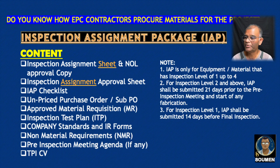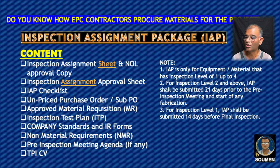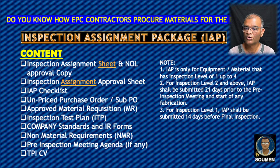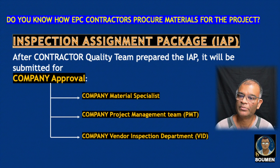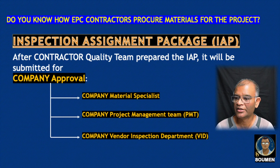Some important notes: IAP is only for equipment or material with inspection level 1 through 4. For inspection Level 2 and above, the IAP shall be submitted 21 days prior to the pre-inspection meeting and the start of any fabrication. For inspection Level 1, IAP shall be submitted 14 days before final inspection. The IAP always goes through company approval similarly to the MR: first to company material specialist, then PMT, then to the vendor, and final approval comes from the Vendor Inspection Department (VID).